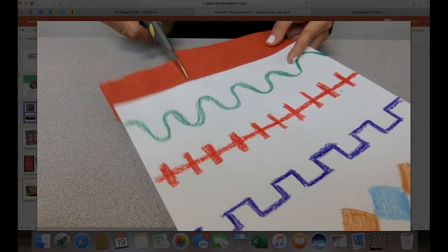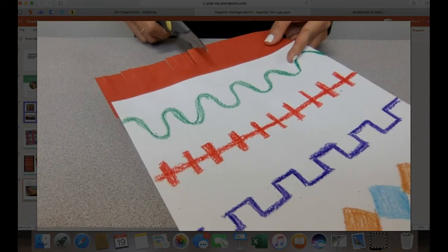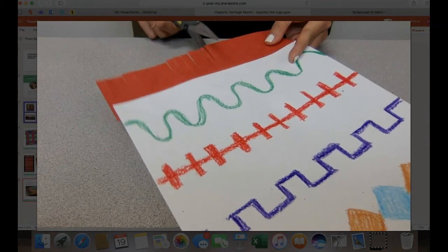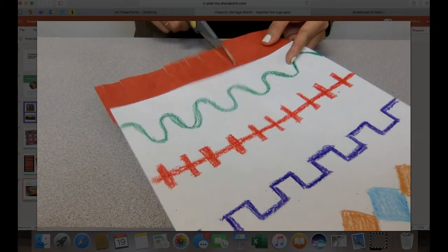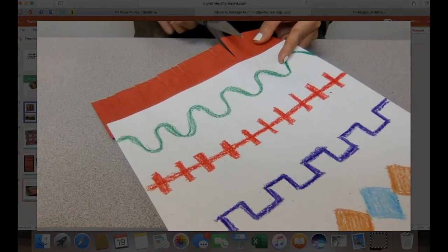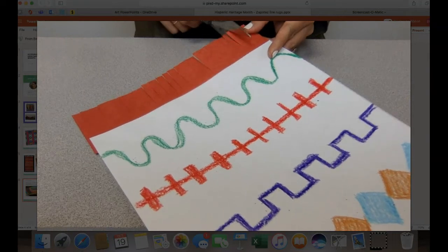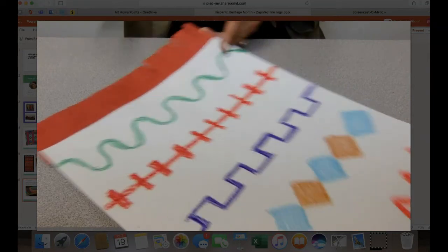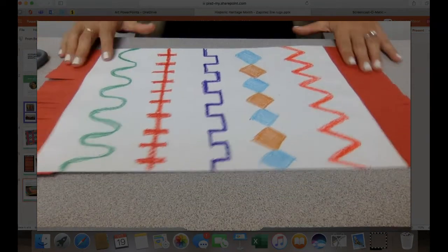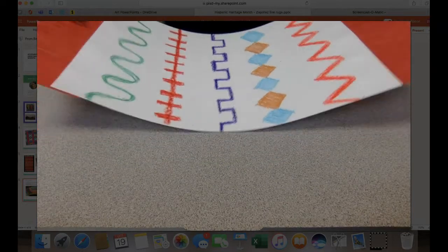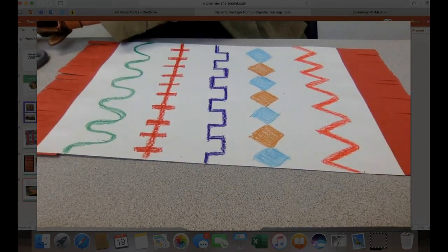I'm doing the fringe on the other side. And lastly, we will paint. So now I have my beautiful fringe. And this is, to me, this is what makes it look like a rug. But now we get to the fun part.